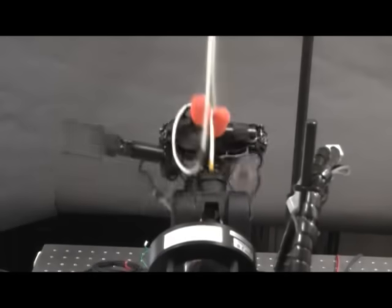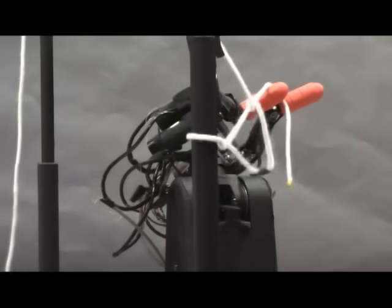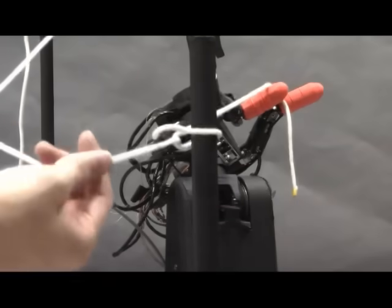This is knotting of a rope. The hand can dexterously control a flexible object with high-speed sensory feedback control, regardless of its unpredictable motion.